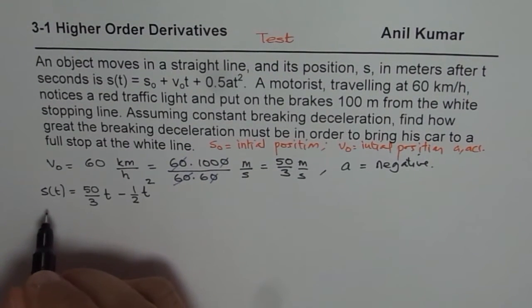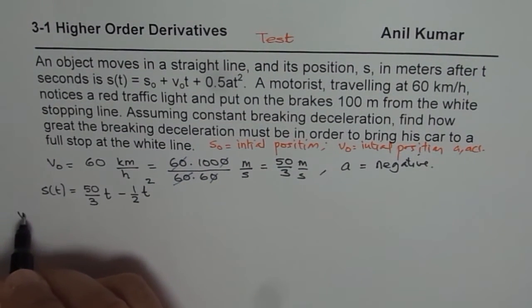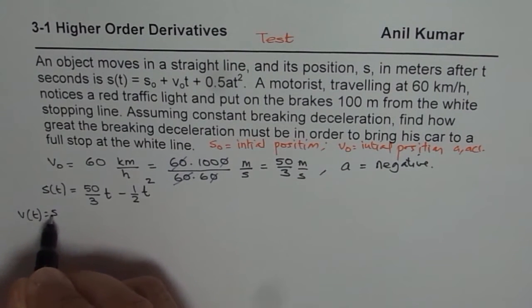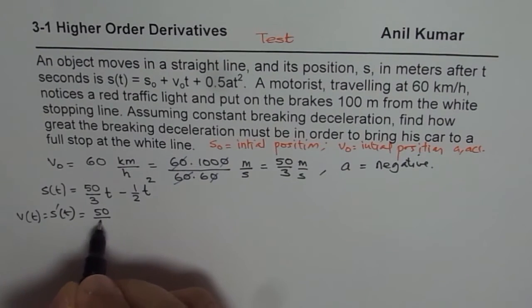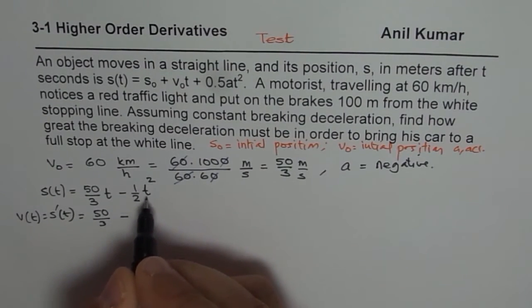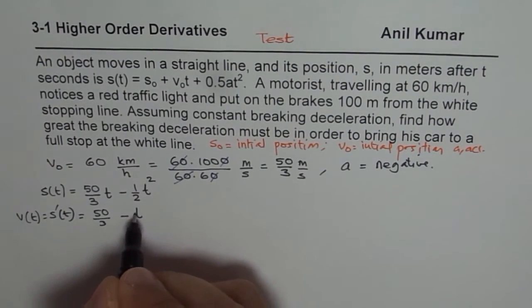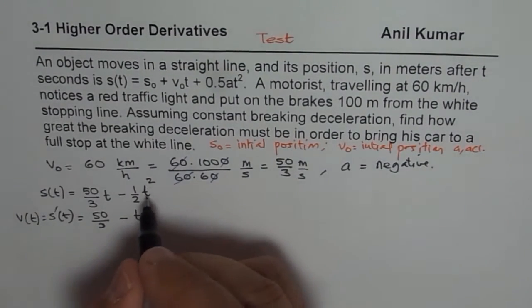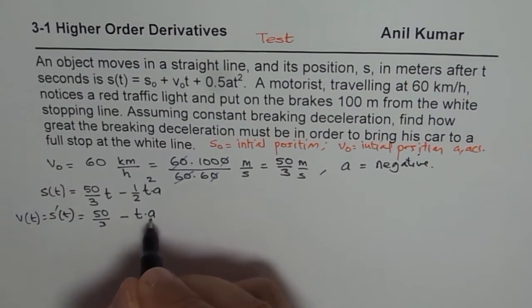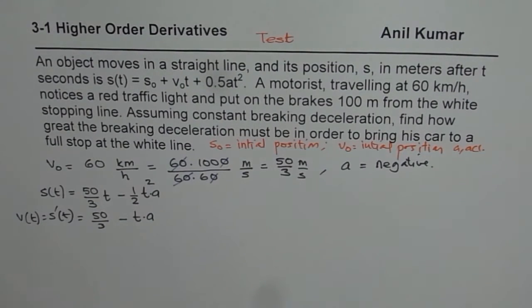To find velocity, we take the derivative of this. So velocity equals the derivative of displacement. So that gives us 50 over 3 minus 2t times half, which will give us t. Oh, I forgot to write a here. So at.